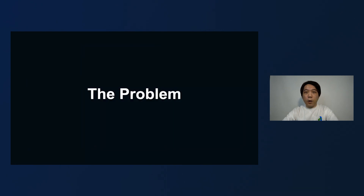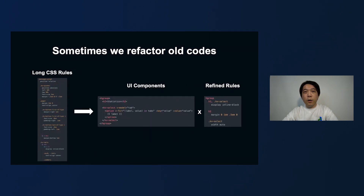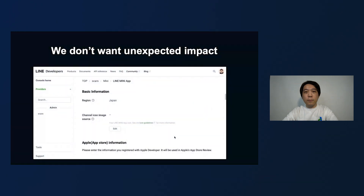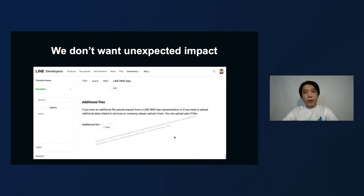One problem of our development is that sometimes we refactor our code. For example, we might refactor a relatively long template into a JSON config with a shared component. Or we might refine our CSS rules into shorter and more manageable ones. And of course, after refactoring, we definitely don't want any unexpected layout glitch.